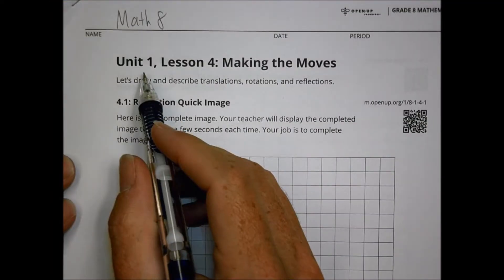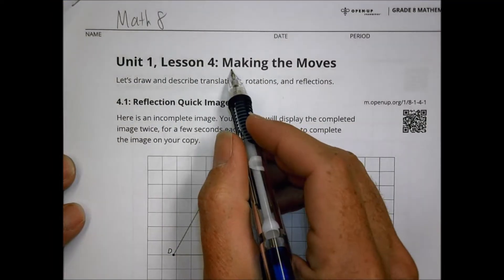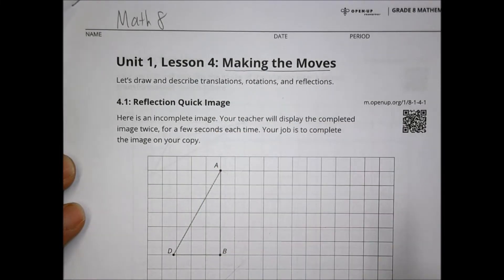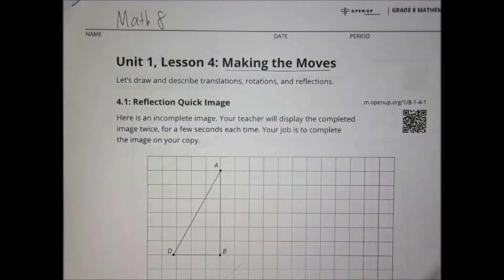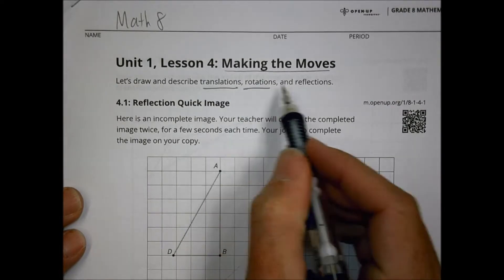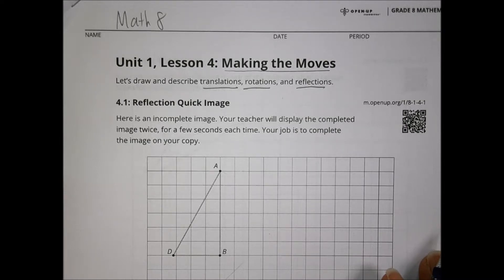Hey there, this is Math 8, Unit 1, Lesson 4. We are talking about making the moves. Today we're going to be drawing and describing translations, rotations, and reflections — three terms we've talked about before in the school year already.